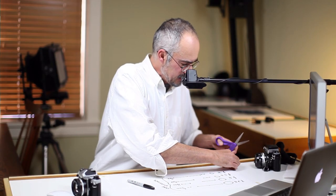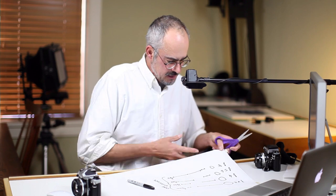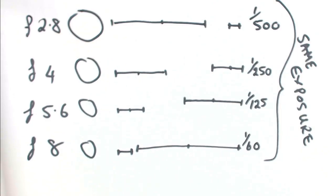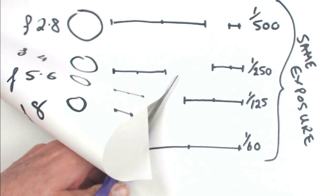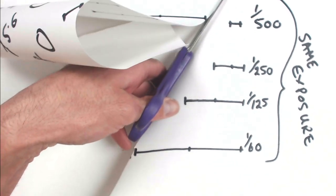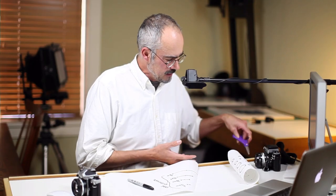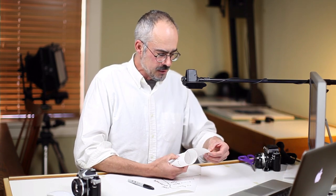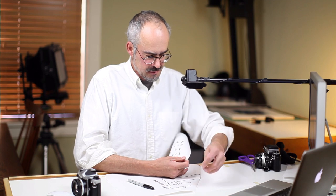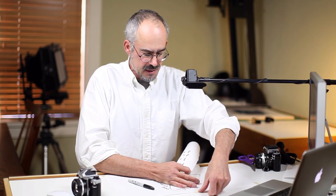I'm going to split the aperture and shutter speed with a pair of scissors. Okay, so I've now broken that relationship between the aperture and the shutter speed.